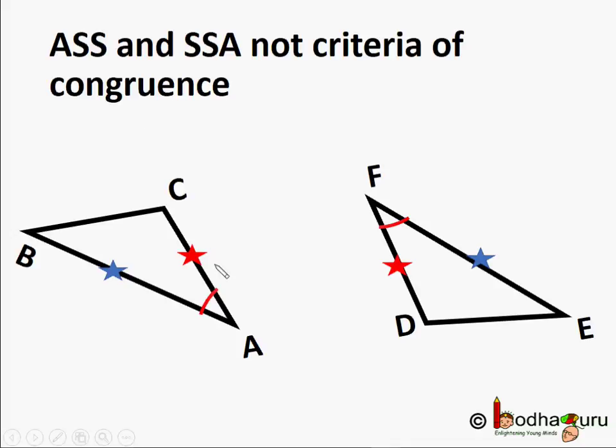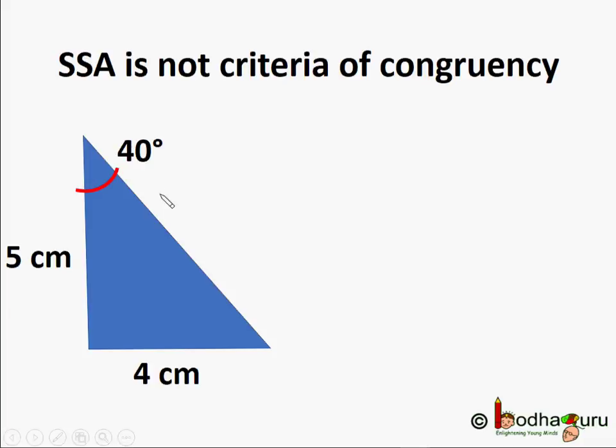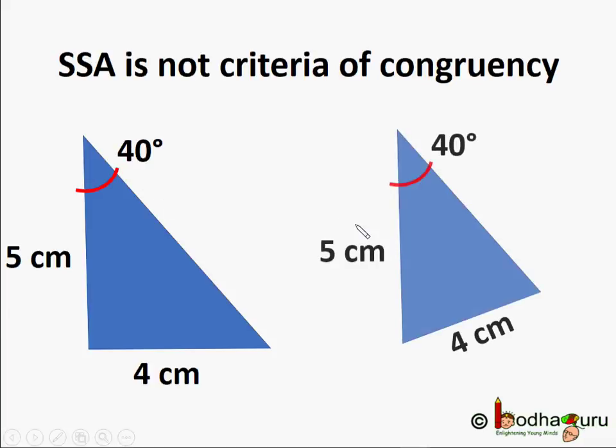ASS or SSA is not accepted as criteria of congruency. If someone asks you to draw a triangle which has 5 cm and 4 cm side and a 40 degree angle, which is not included between the equal sides, you can actually draw more than one triangle like that. Means, SSA doesn't necessarily make two triangles congruent.